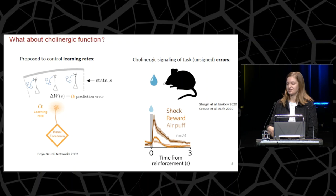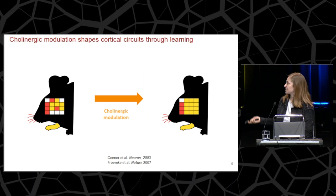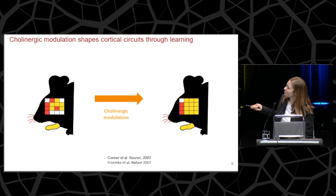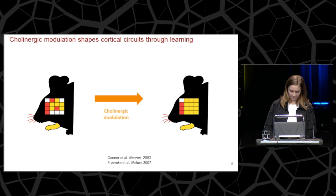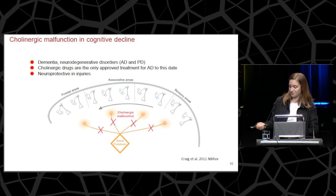We know from experimental evidence that cholinergic signaling scales with unsigned prediction errors. On a more local level, acetylcholine is involved in synaptic plasticity, and this modulation can shape cortical circuits and facilitate learning. For example, a rodent trained on a skilled motor task involving its forelimb — shown here in yellow — will have its forelimb representation expand as it learns the task, and this expansion is enabled by cholinergic modulation.